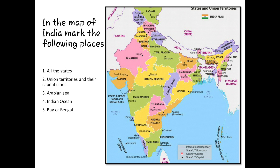The next question, number 3, is Arabian Sea — you can see where the Arabian Sea is located. Then mark the Indian Ocean and the Bay of Bengal.